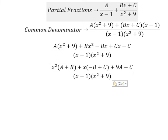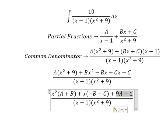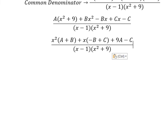Now we compare coefficients. The constant equals 10, so 9A minus C equals 10. Since there is no s or s squared on the right side, those coefficients should each equal zero. Now we have the system of equations.